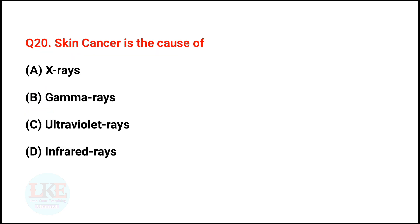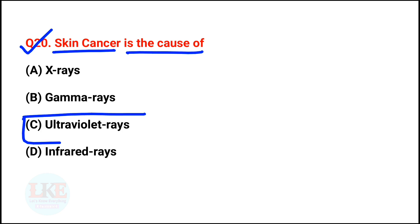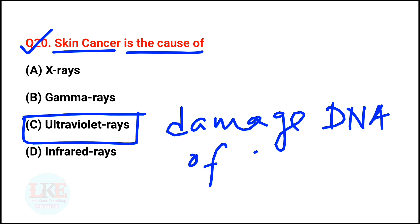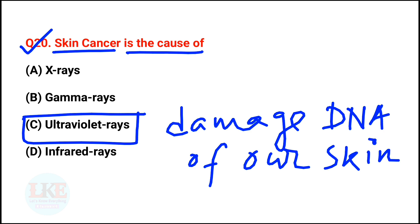Question number 20: skin cancer is caused by ultraviolet rays. Ultraviolet rays from the sun damage DNA in our skin, causing abnormal cells to form. These abnormal cells rapidly divide in a disorganized manner, forming a mass of cancer cells.